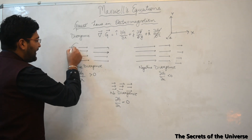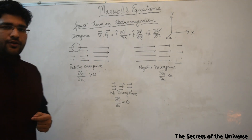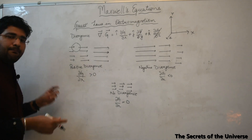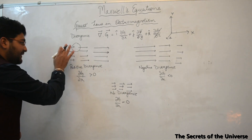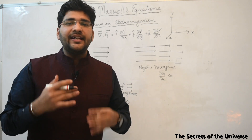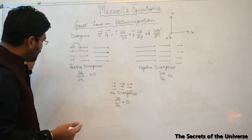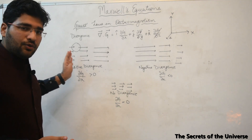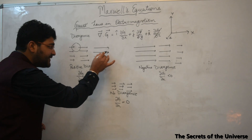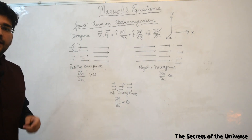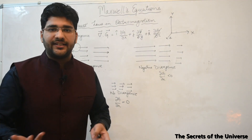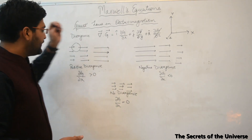To understand divergence, we draw an arbitrary sphere of any size inside this field. As you can see, the amount of field entering the sphere is less compared to what is coming outside — there is some source causing the field to diverge inside the sphere. This is known as positive divergence. Since G has increased along X, the derivative of G with respect to X is greater than zero.